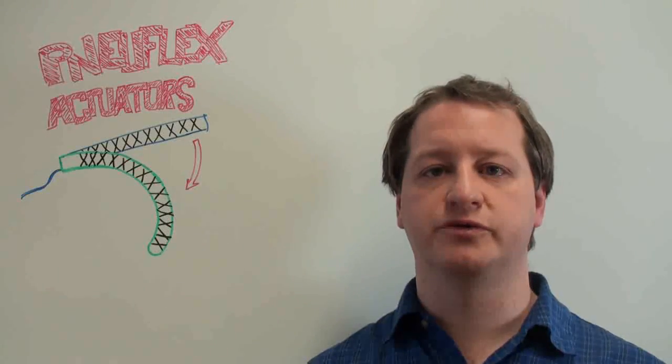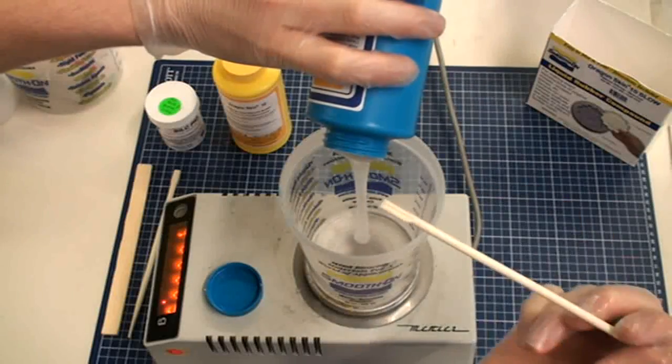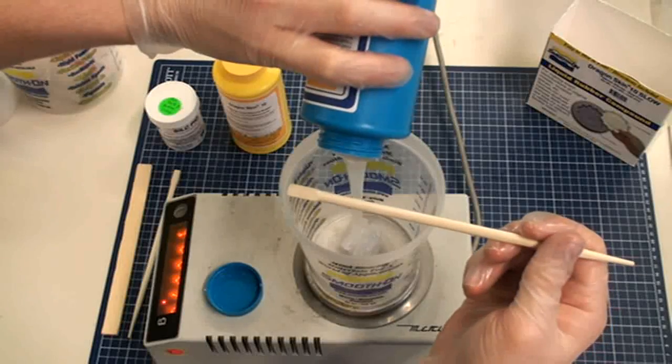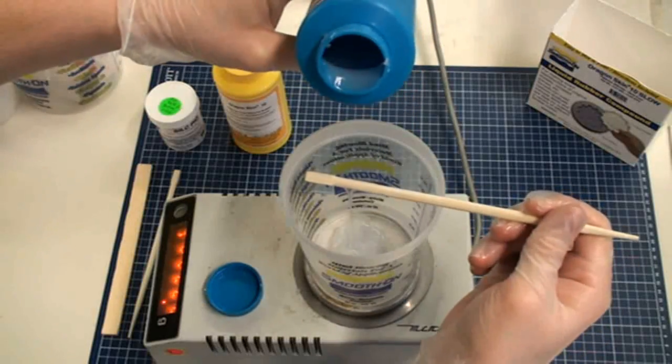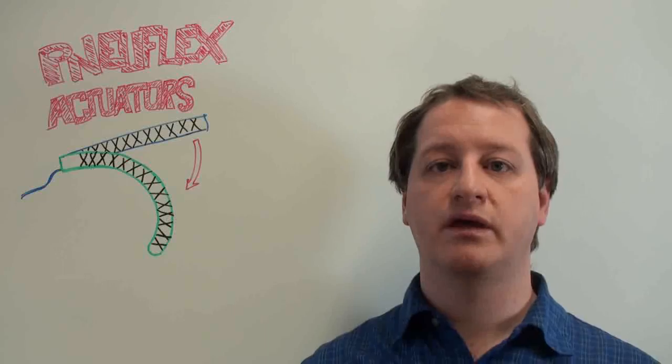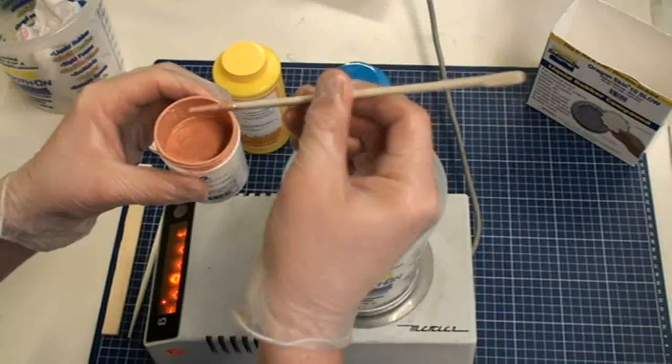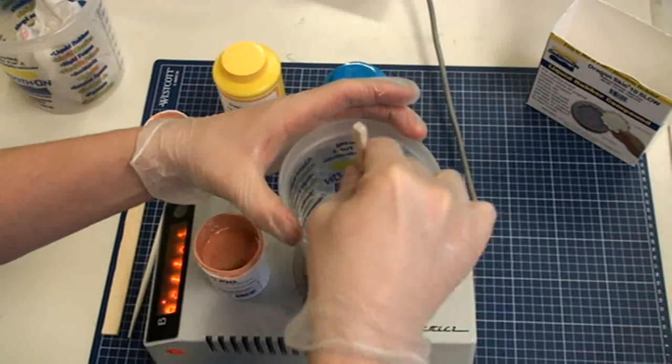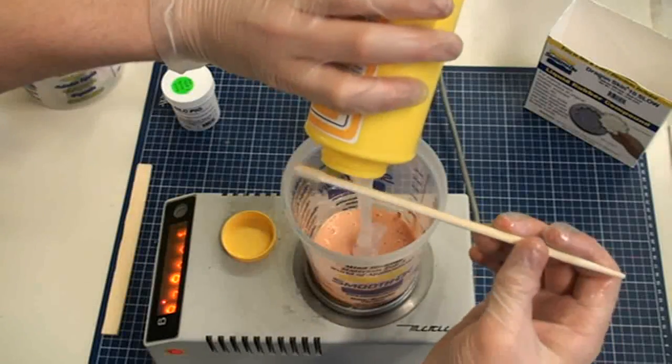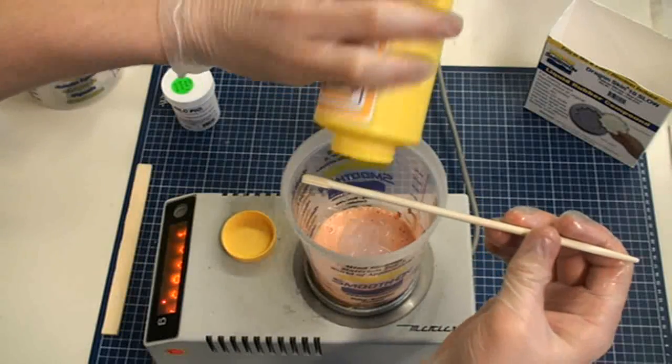When we are finished preparing the mold, we can start mixing the silicone. First, start with measuring part B. If you want to have a colored silicone, you can now add pigments to it. As a last step, we add the second component by equal weight.